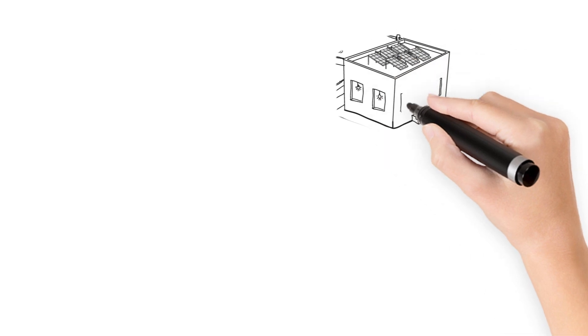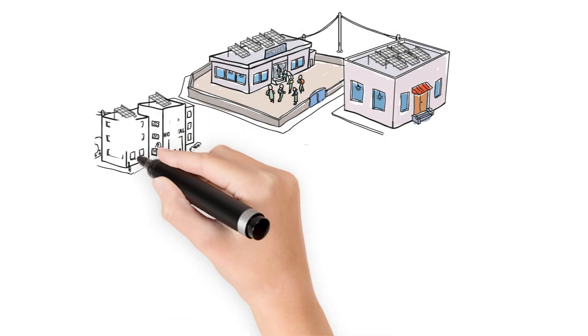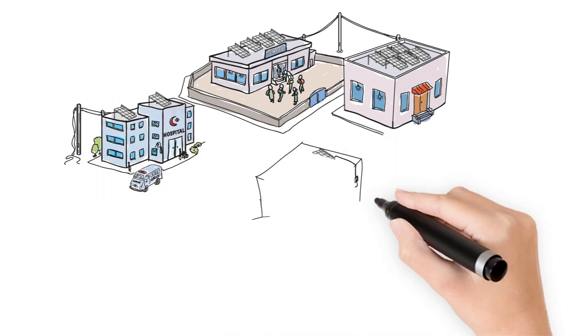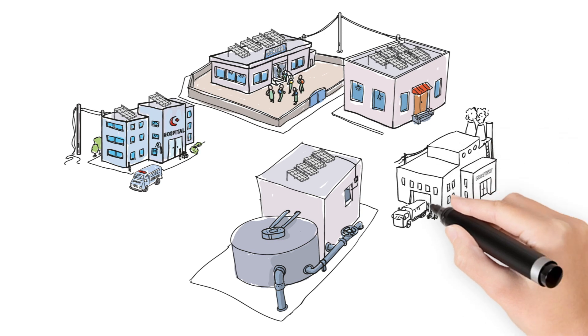Distributed rooftop solar systems allow consumers to have electricity, even if part of the grid is damaged. Hospitals can continue life-saving treatments. Water supply, sewage treatment, telecommunications, and businesses can all continue to function.